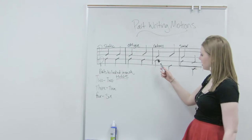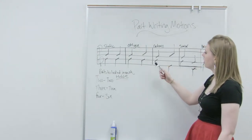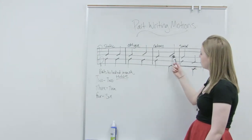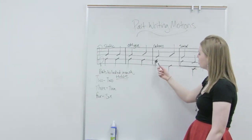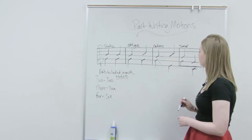Contrary motion means that each part moves but in opposite directions. In this example, we start with a G and a B, and the B goes up to a C and the G goes down to an E, which means it's contrary motion.